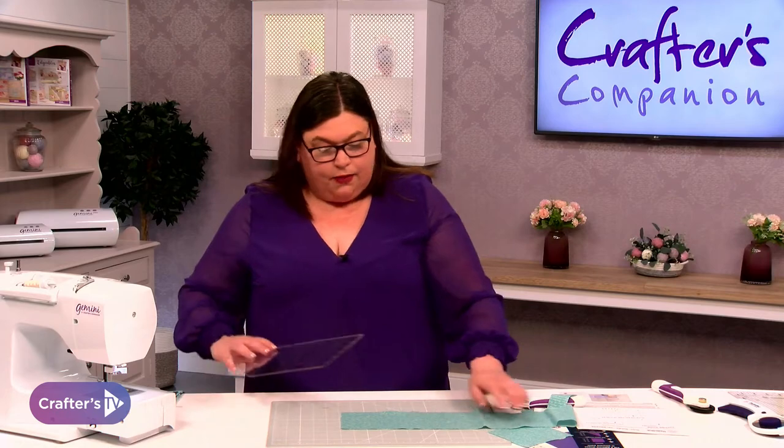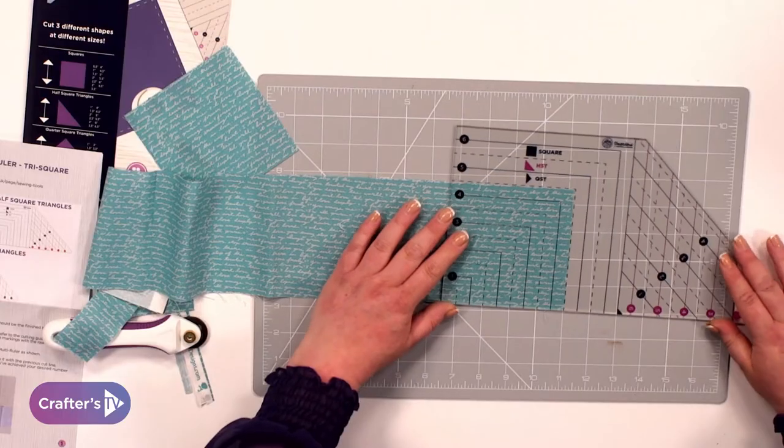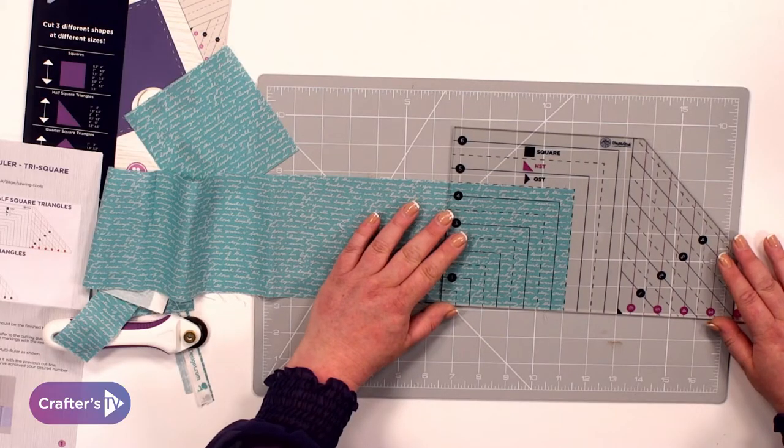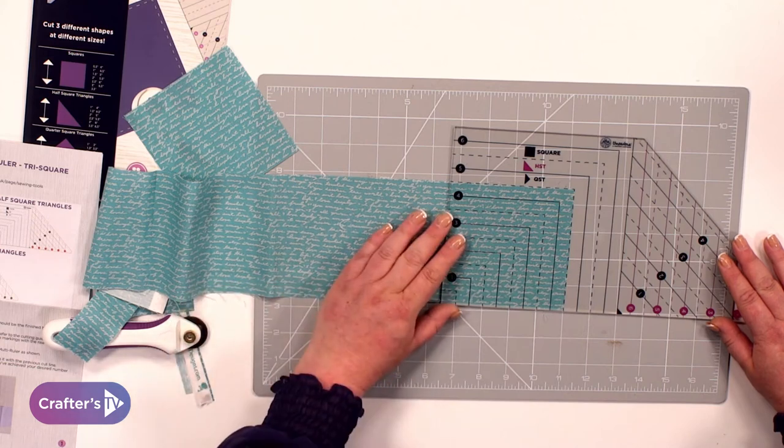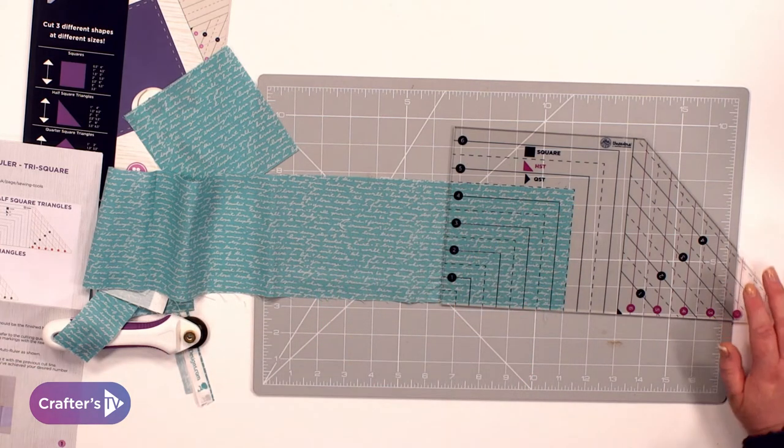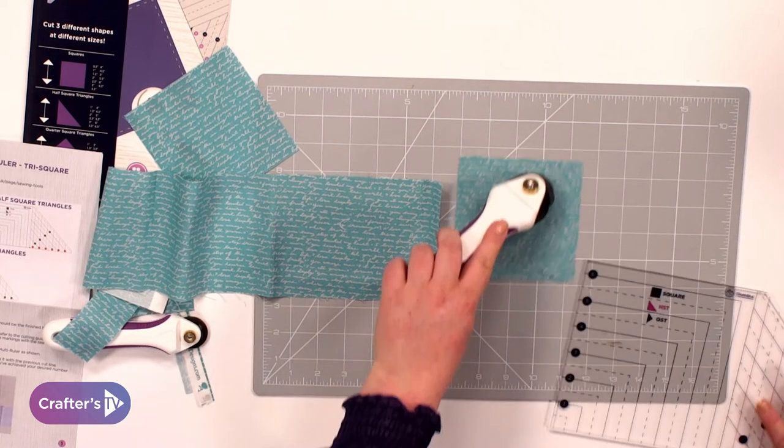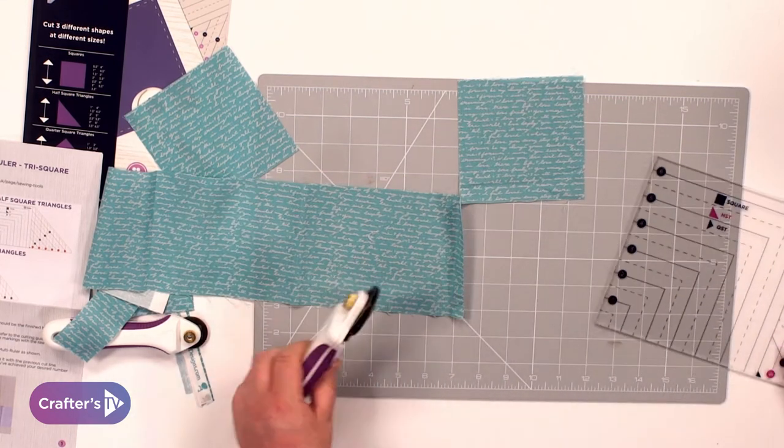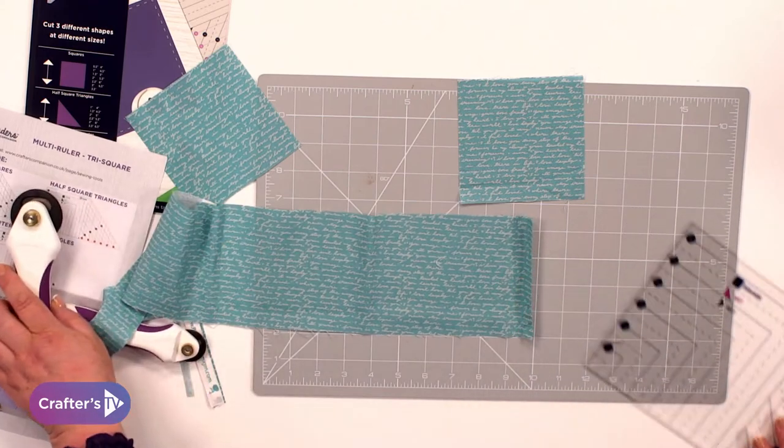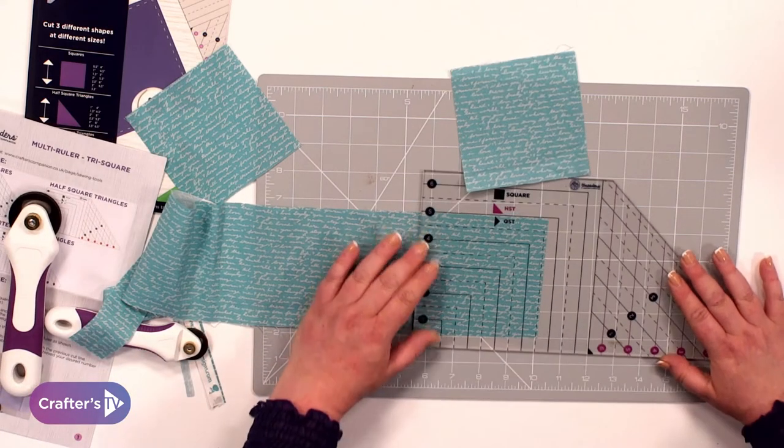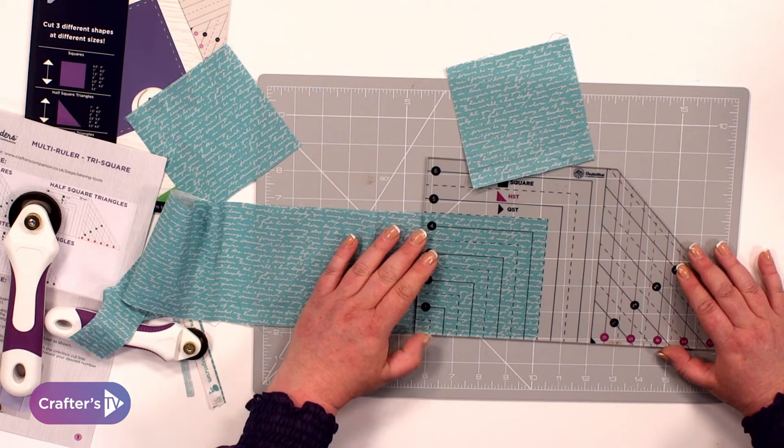You're going to again bring in the ruler. I've already cut this to size. I'm lining up that four and a half inches, cut up the side and then what you can do is continue along that strip to get your multiple pieces.